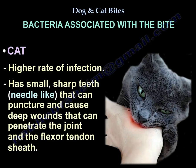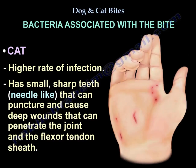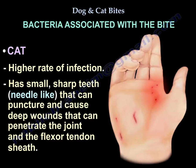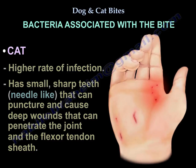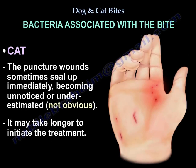The cat bite has a higher rate of infection. The cat has small, sharp, needle-like teeth that can puncture and cause deep wounds, penetrating the joint and the flexor tendon sheath. This puncture wound sometimes seals immediately so it is not noticed or is underestimated, making it not obvious externally — therefore it takes longer to initiate treatment.